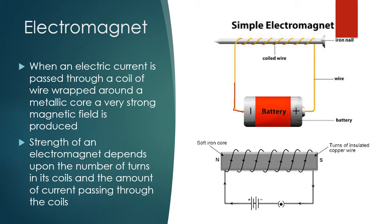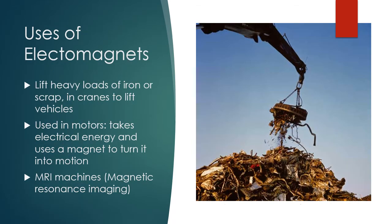This simple electromagnet isn't very strong because it's just powered by a battery, but you can increase its strength in a few ways: one is by increasing the number of turns of coils — wrapping the copper wire more times around the iron nail makes the magnet stronger. The other is by increasing the amount of current, using a bigger battery. On a larger scale, electromagnets can be found in cranes that lift vehicles, and in MRI machines — magnetic resonance imaging — which also rely on this electromagnetic theory.